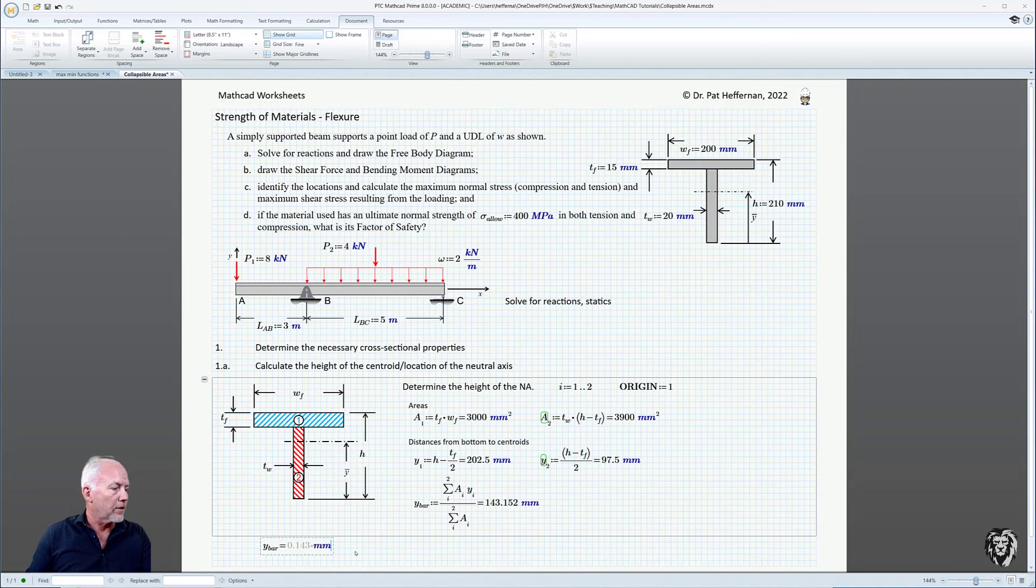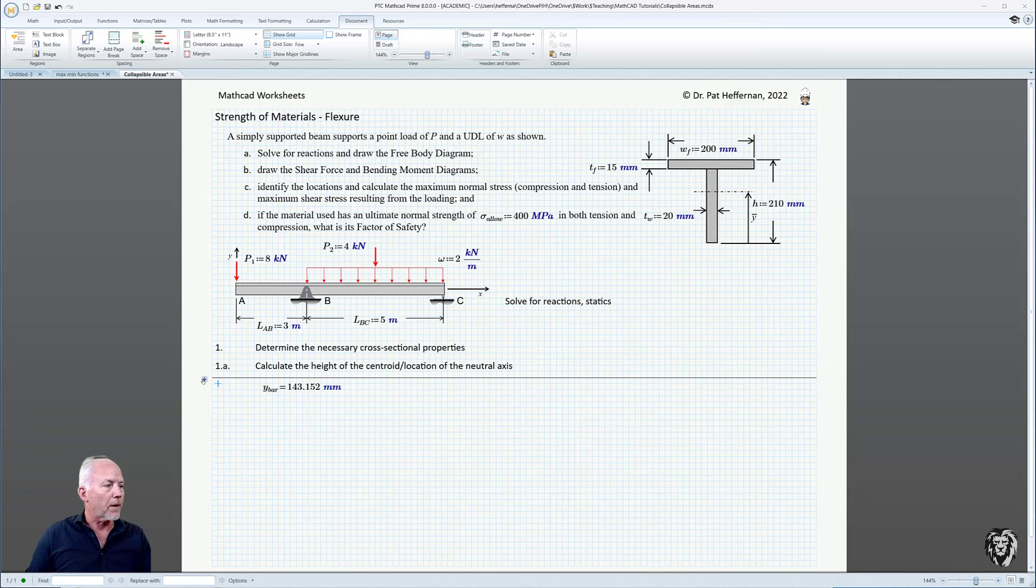I prefer it in millimeters, so I'm going to put an extra M in there. And now, when I collapse it, I still know what Y bar is, even though I don't have to see the details of the calculation.